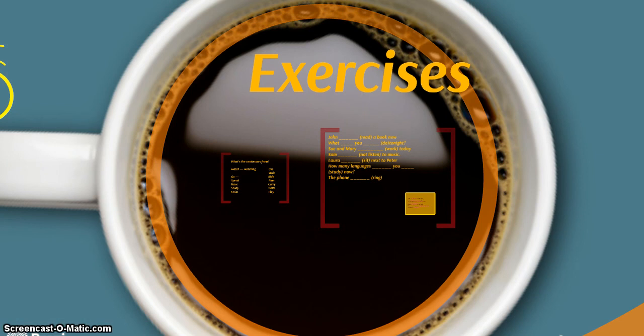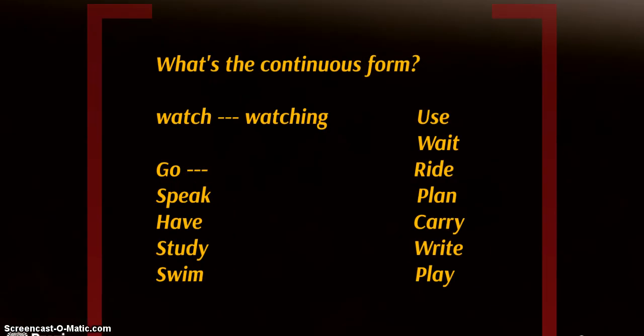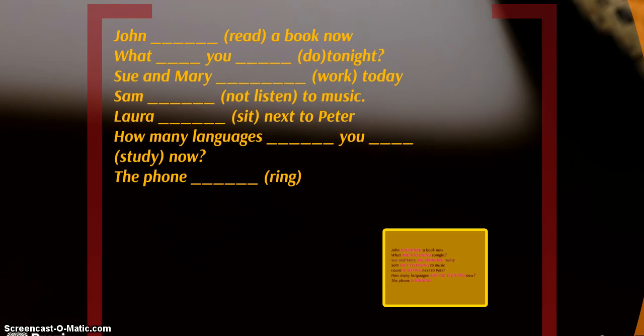So, now, you're ready for some exercises. Let's go. Exercise number one. What's the continuous form? Stop the video now and write the continuous form for these verbs. We will check the answers in class. Exercise number two. Complete this text, this sentence, sorry, with the present continuous tense of the verbs in brackets. You can stop the video now and complete the sentences. Then play it again to check the answers.